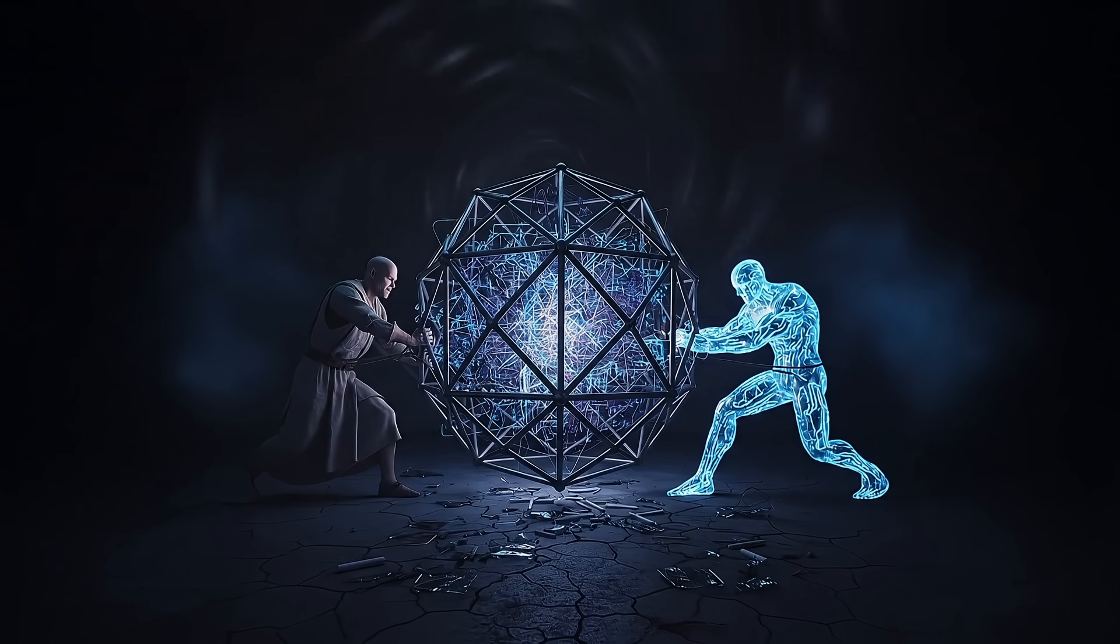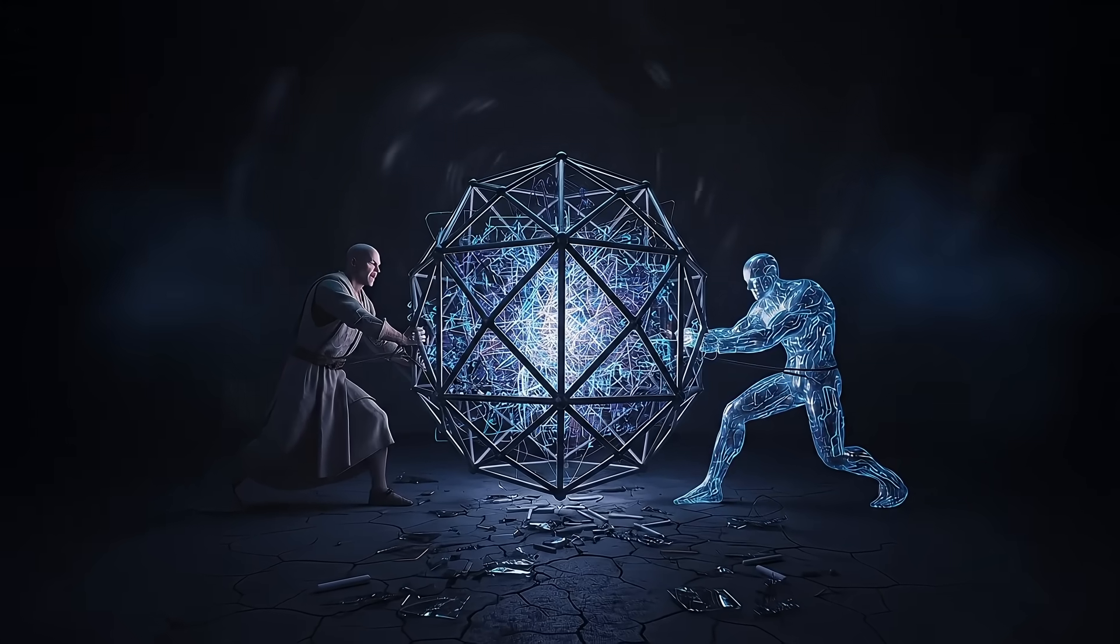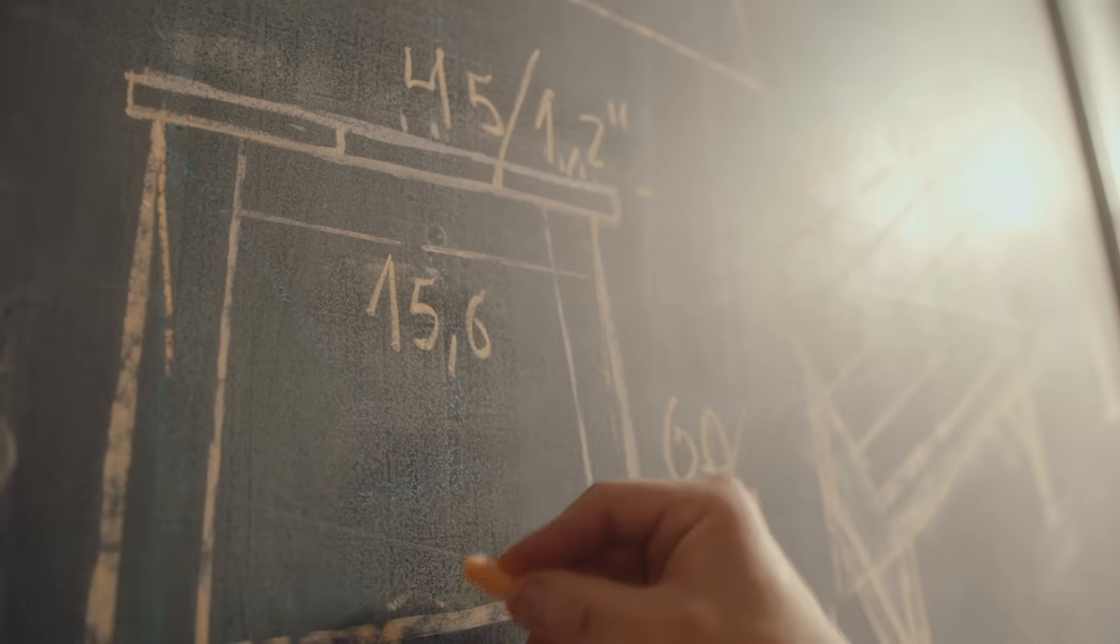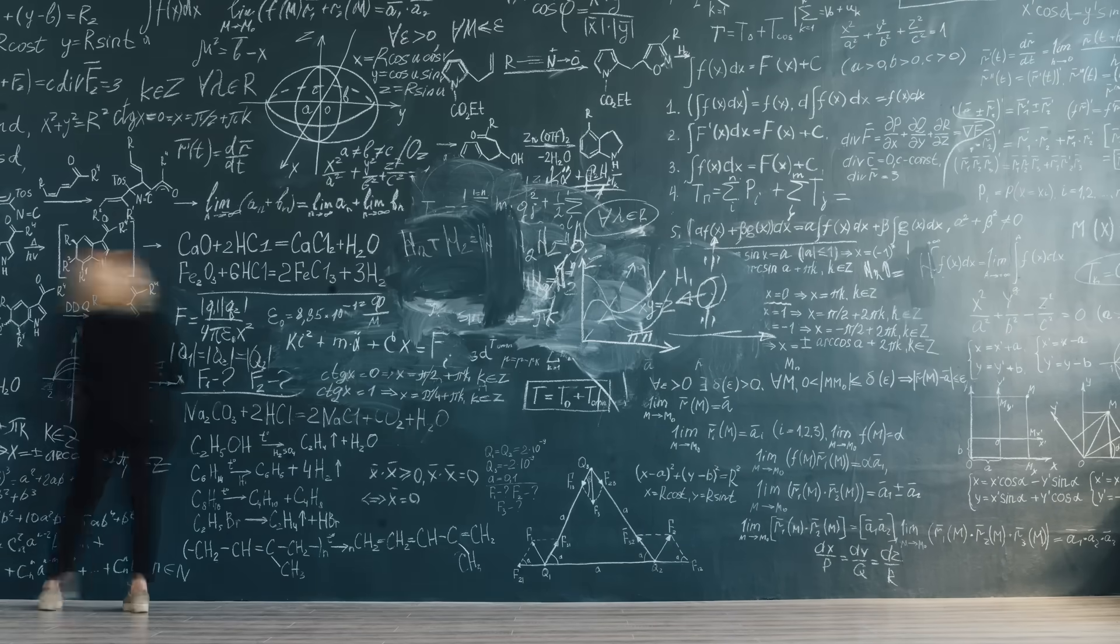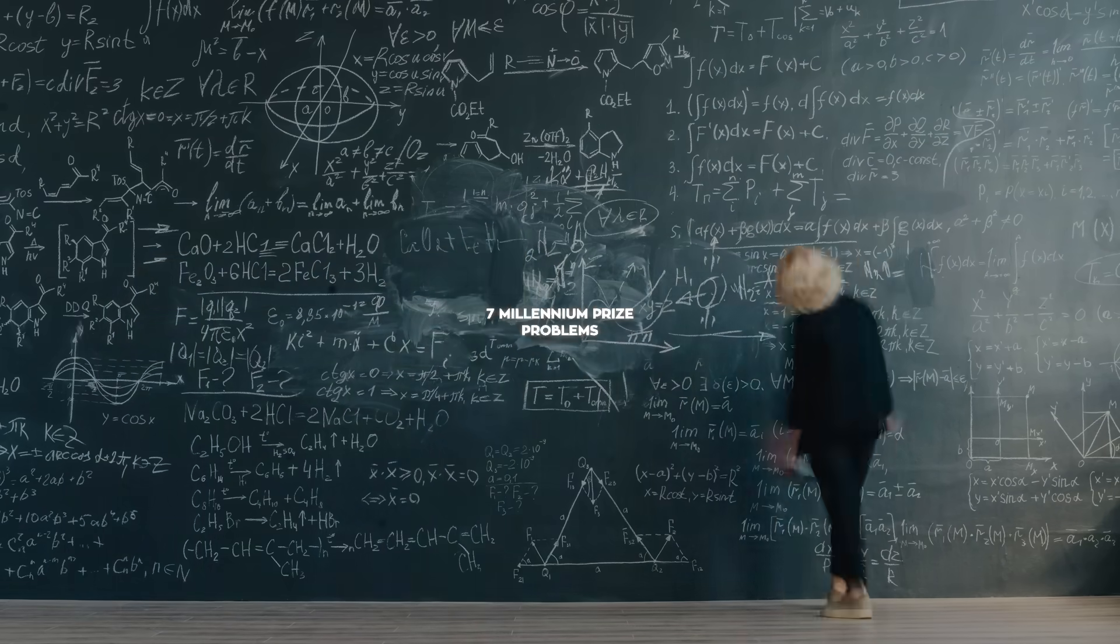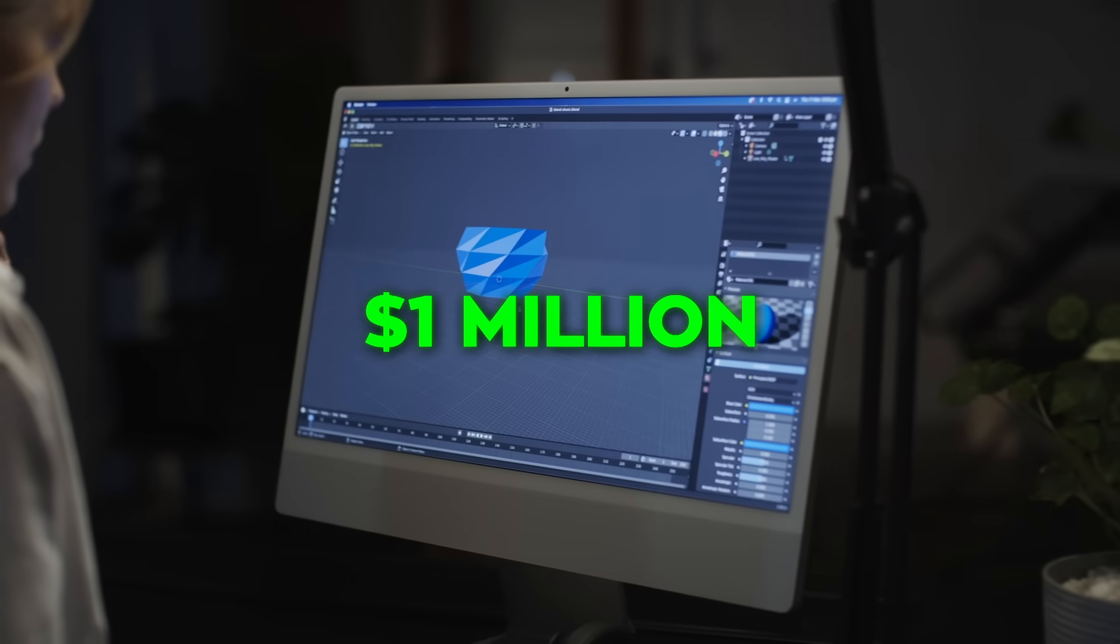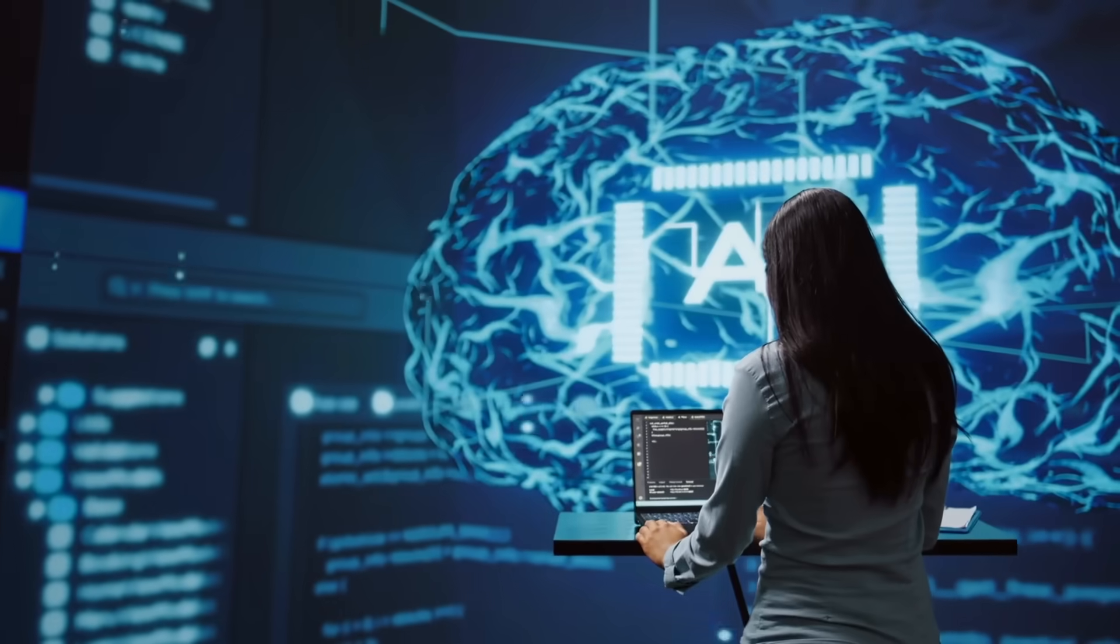For decades, some of the math behind this has been stuck in a deadlock. Mathematicians have tried and failed to solve certain equations, and these problems are so infamous that they're actually listed as one of the 7 Millennium Prize problems. Solving just one of them wins you a million dollars. That's how unsolvable they seemed.